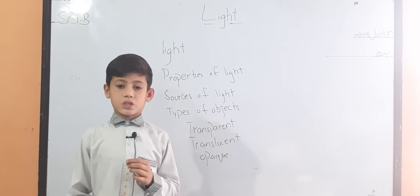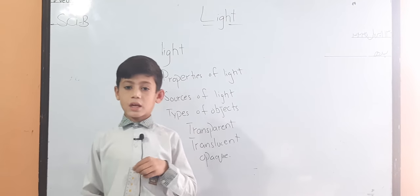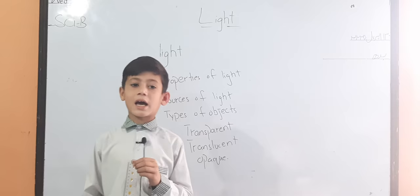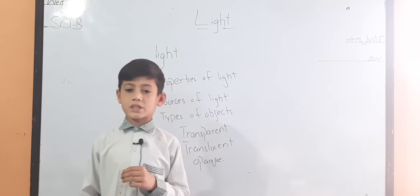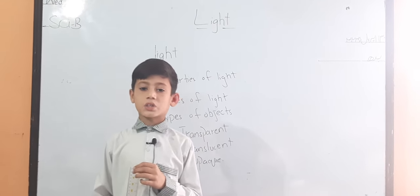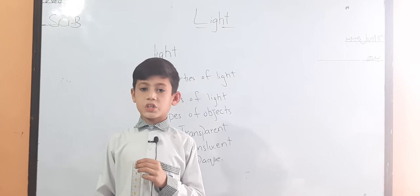Natural sources. The light is made by alarm light. It is called natural sources. For example, sun, star, etc.